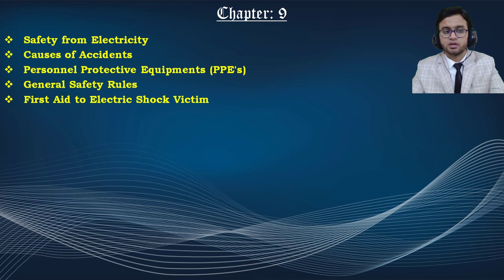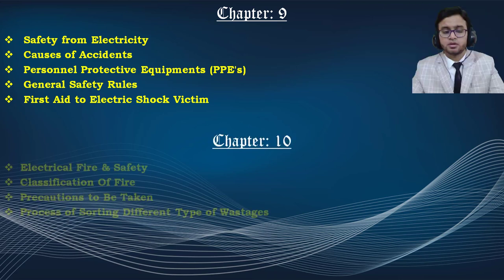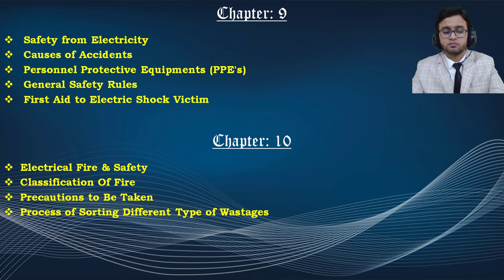In chapter 9, we discuss safety from electricity — the causes of accidents, the personal protective equipment to use when working with live wires, general safety rules, and first aid for electric shock victims. Chapter 10 covers electrical fire and safety, including the different classifications of fire, precautions to be taken, and the process of using different types of fire extinguishers on site.